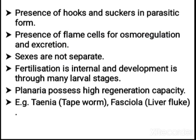They have hooks and suckers in parasitic worms, because they have to be attached to the intestine; otherwise they will be sent out by intestinal movements. That is why hooks and suckers are present. They also have a special type of cells called flame cells, which are helpful for osmoregulation and excretion.